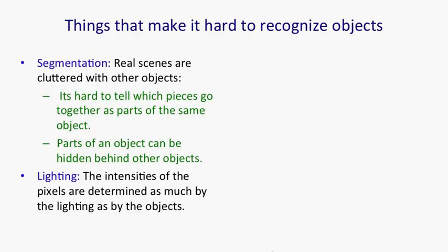Remember, to recognize an object, you've got to convert a bunch of numbers, that is, the intensities of the pixels, into a class label. And these intensities are varying for all sorts of reasons that are nothing to do with the nature of the object or nothing to do with the identity of the object.